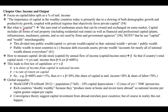What does Piketty mean by capital? He explains it as the sum total of non-human assets that can be owned and exchanged on some market. Capital includes all forms of real property including residential real estate, as well as financial and professional capital — plants, infrastructure, machinery, patents, and so on, used by firms and government agencies. He uses the terms capital and wealth pretty much interchangeably throughout the book.